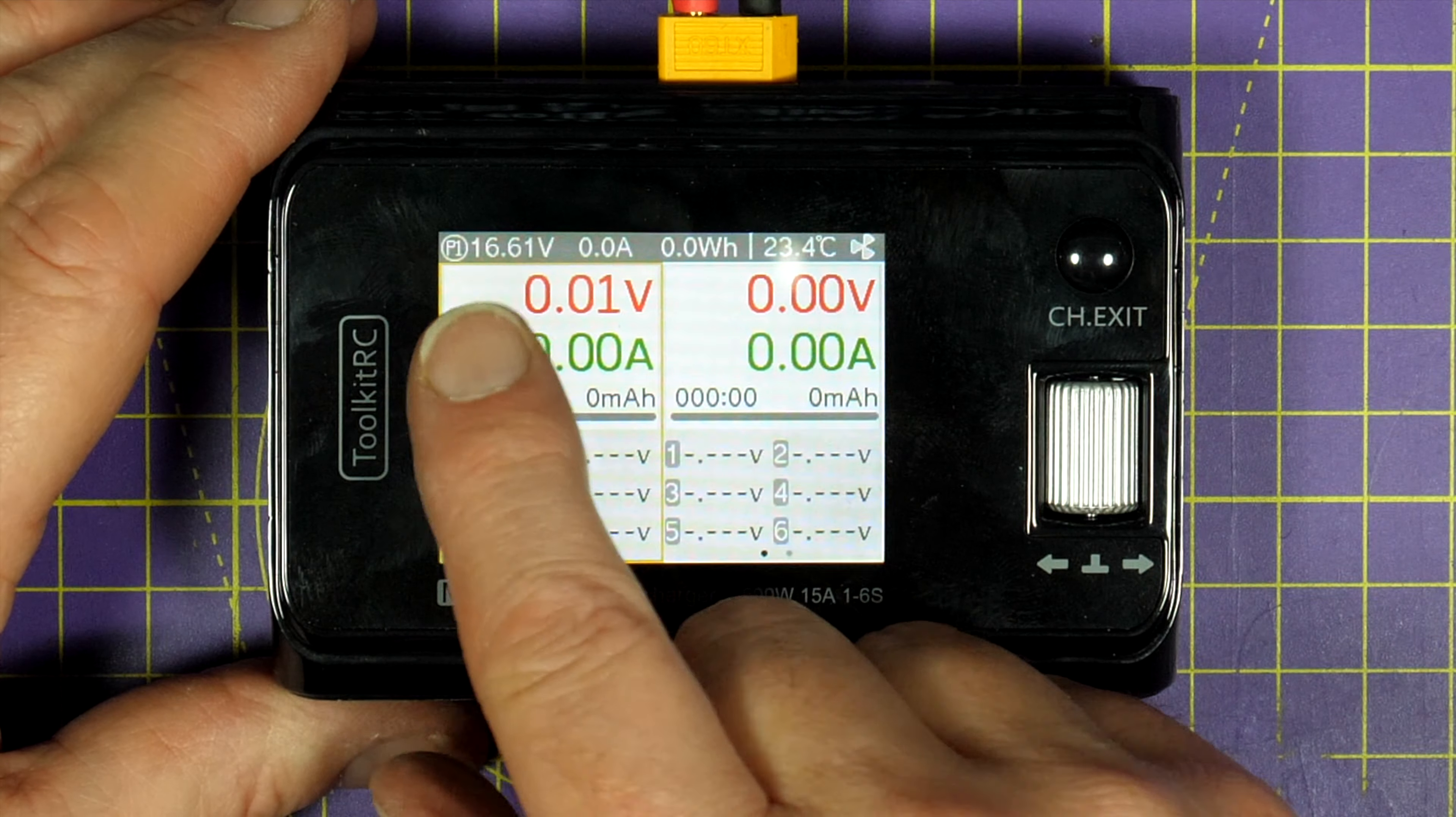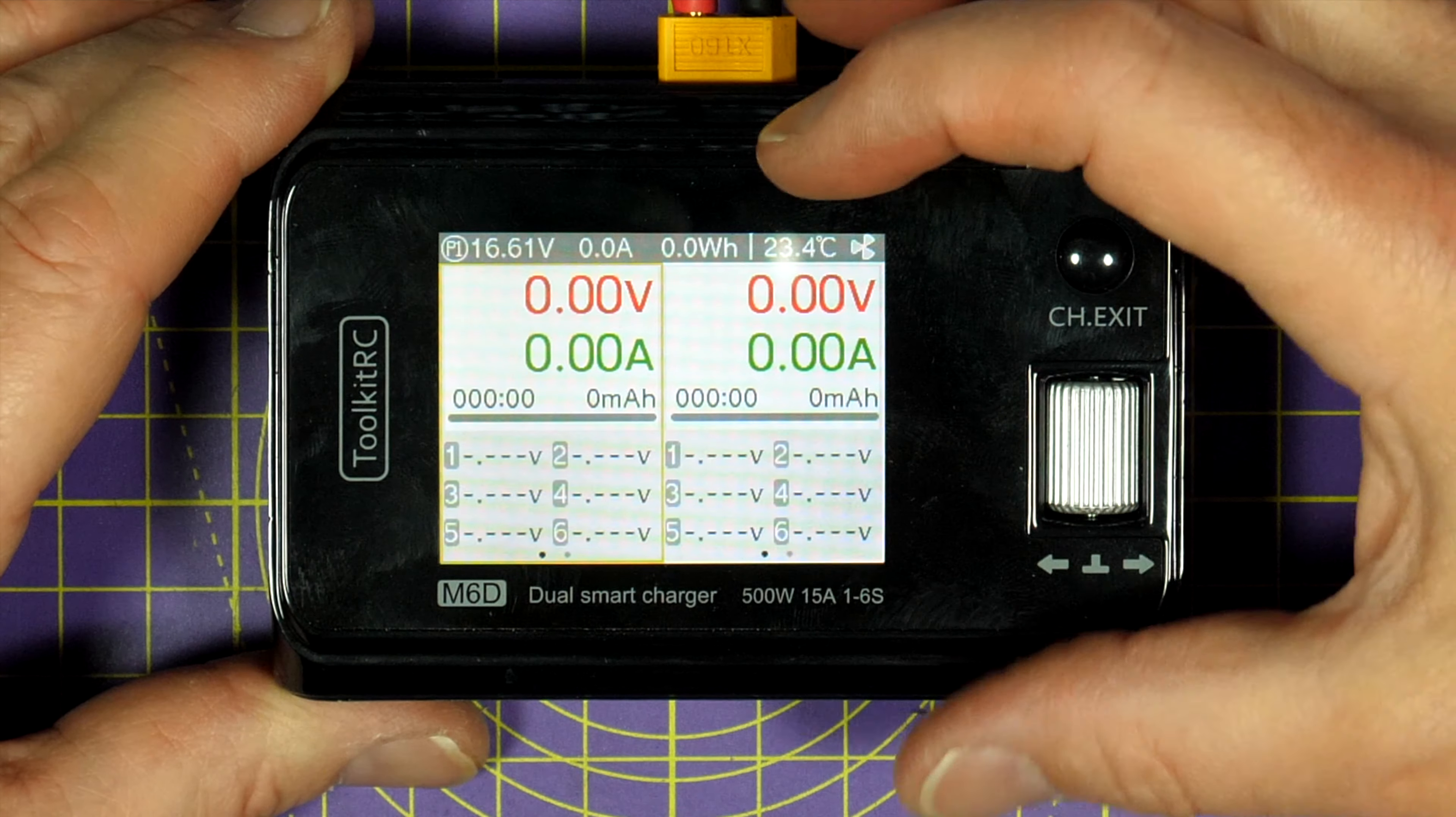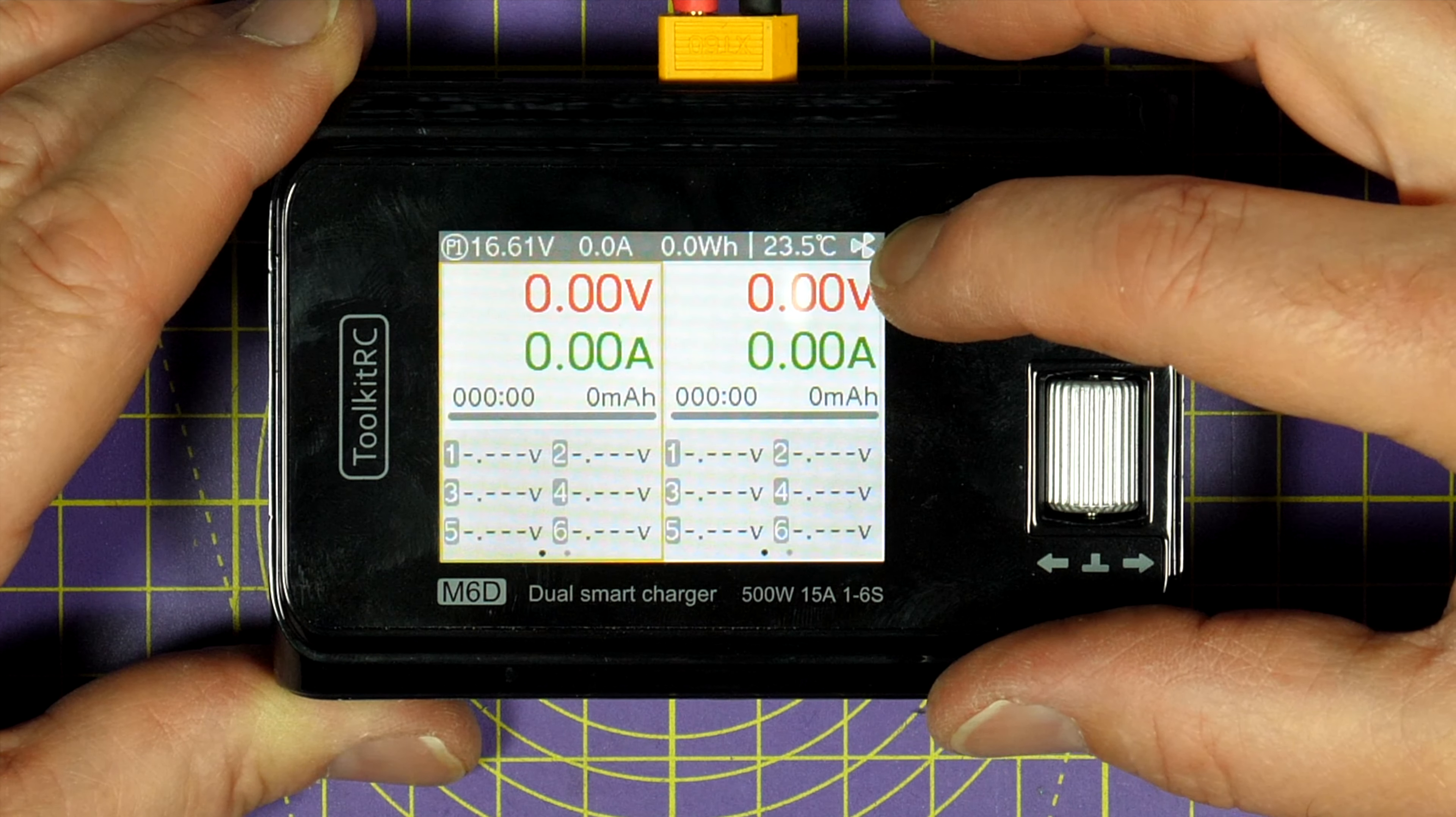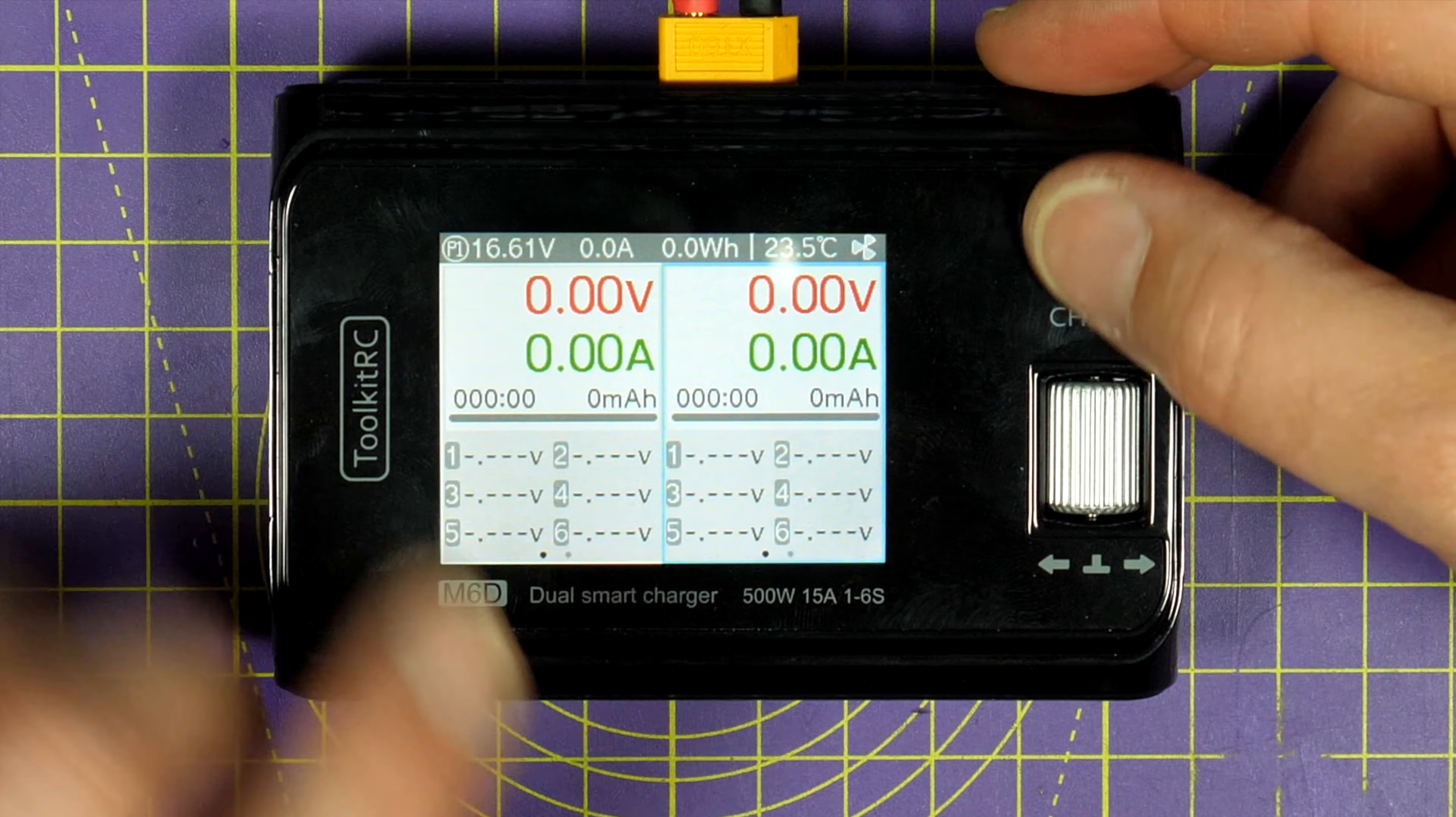So up here is the input supply details, volts, current and power in watts. And I assume this is the internal temperature of the unit. And I think that comes on a little fan icon when the fan's running. If you press the channel exit button up here it switches between the channels.